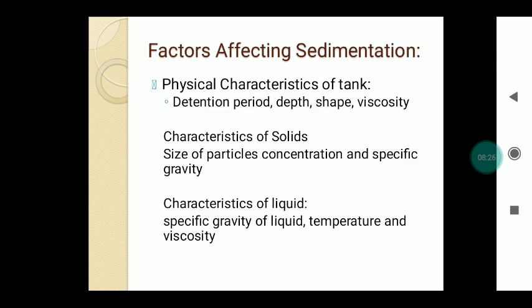Factors which affect the sedimentation process include: the physical characteristics of the tank — detention period, depth, shape, and viscosity of the sedimentation tank; characteristics of the solids — size of particles, concentration, and specific gravity; and characteristics of the liquid — specific gravity, temperature, and viscosity of the liquid in the sewage.